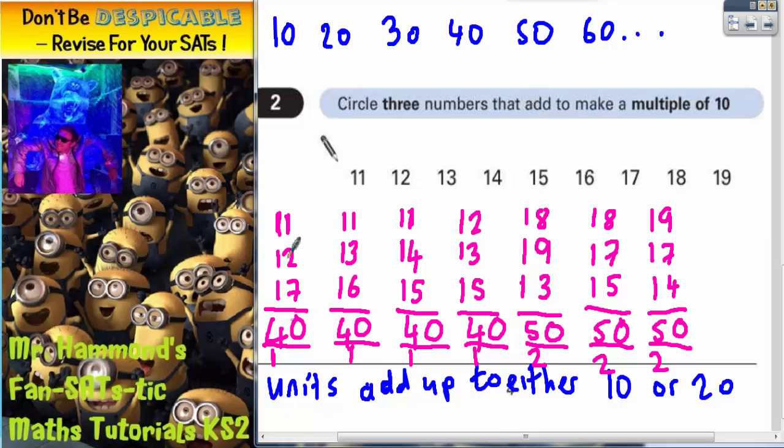Just to recap, you need to pick a group of three numbers where the units digits add up to something that ends in a zero. If the units digits add up to something that ends in zero, the overall total will be a multiple of ten. So you could actually circle any group of these three numbers.